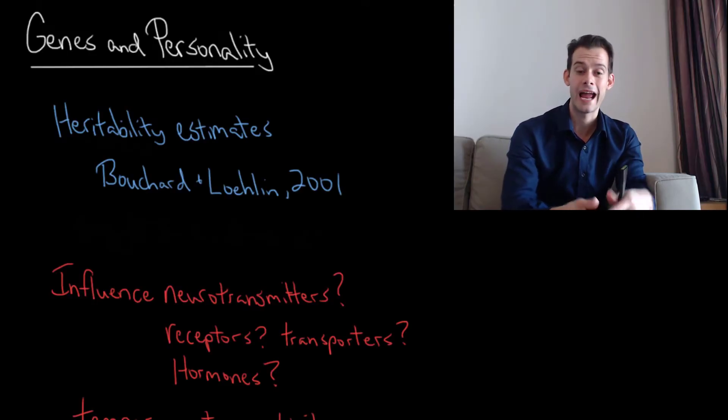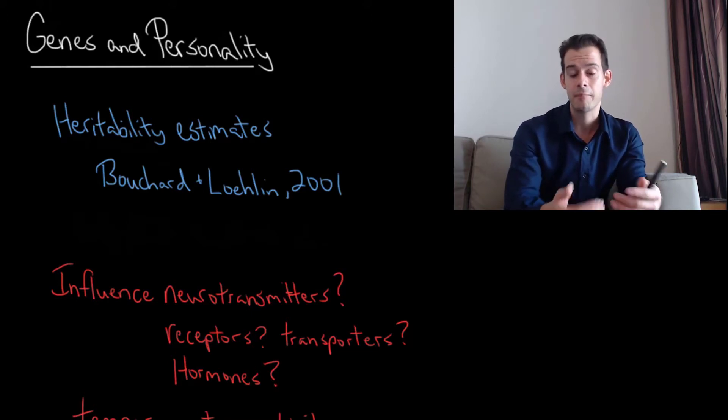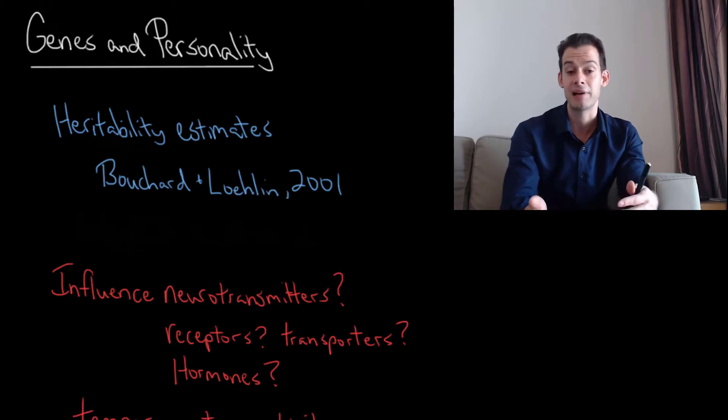Hi, I'm Michael Corayer and this is Psych Exam Review. In the previous video I talked about the behavioral approach system and the behavioral inhibition system. We looked at the idea that people might differ in these systems and those differences might cause differences in the expression of personality.